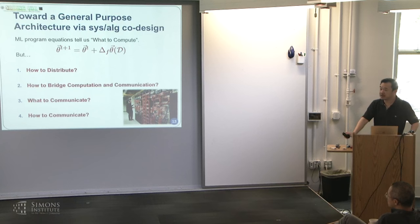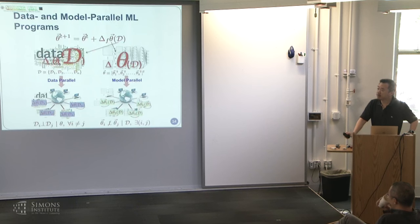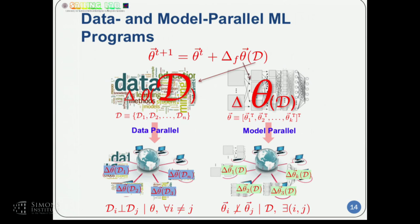I'll share work from my group and colleagues at CMU across four dimensions on developing a general-purpose architecture for system-algorithm co-design. The first question when you have a distributed system is: what to distribute? You may have very big data, very big parameters, or both. Even from the start — when you divide data to different machines versus dividing the model to different machines — the type of statistical care you need to maintain is going to be different.